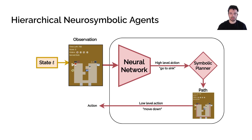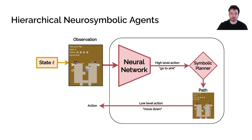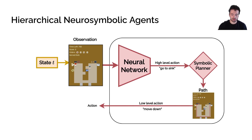The neural network outputs a high-level action, which is then fed to a symbolic planner — a low-level A* algorithm that finds the shortest path. For example, when we go to the sink, it finds the shortest path from where the agent is to the sink. That path then dictates which low-level actions the agent takes, such as turn left, turn right, move up, or move down.